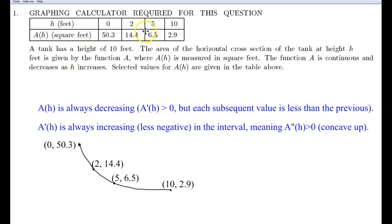We're given a table right here, and then it says a tank has a height of 10 feet. The area of the horizontal cross-section of the tank at height h is given by the function a, where a of h is measured in square feet. Function a is continuous and decreases as h increases. Selected values for a function a of h are given in the table above.